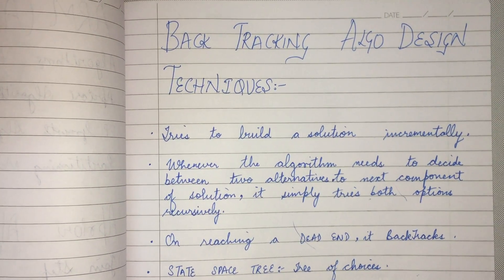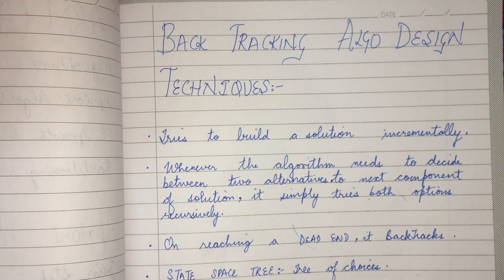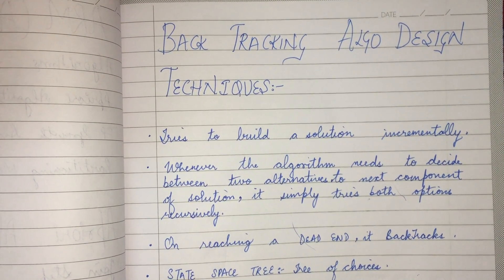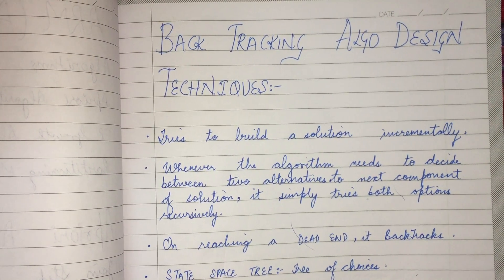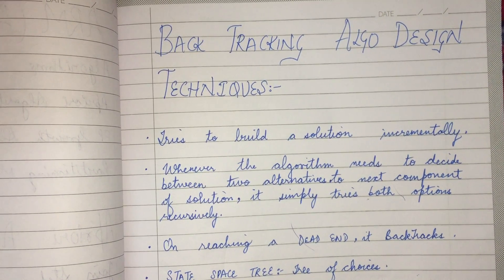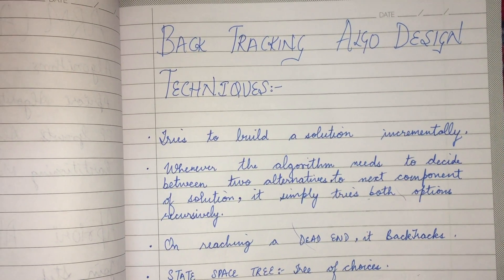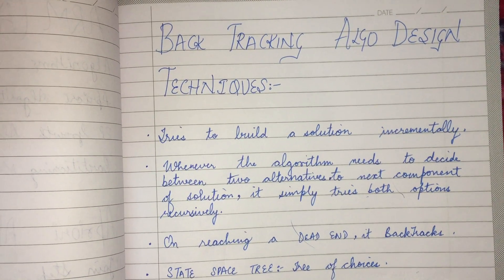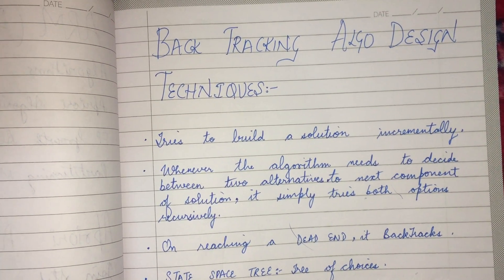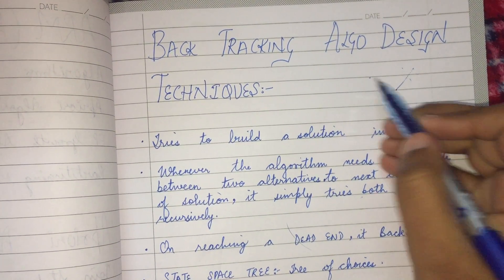Today we are going to start with the backtracking algorithm design technique. Backtracking means that we have reached a particular state and then we reverse our steps from that stage. We will incrementally find a solution, going forward one step at a time, and as soon as we find a step where moving further will not give a solution, we backtrack. It is like going on a path and turning back when you see the path won't lead to your destination.